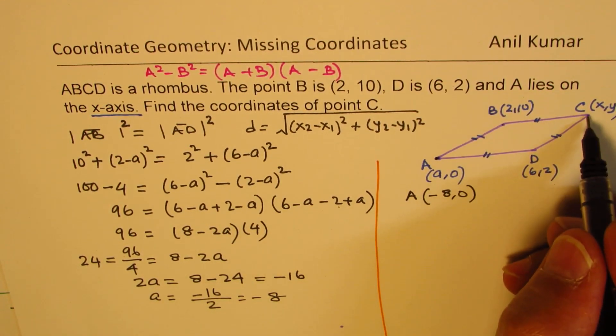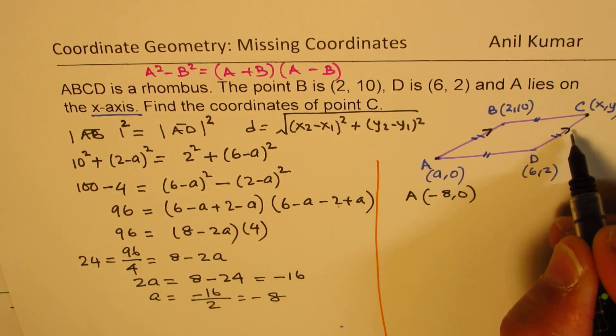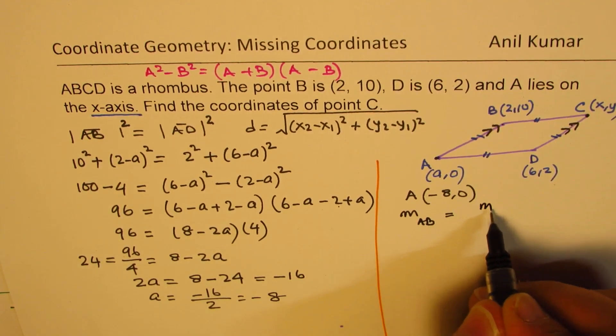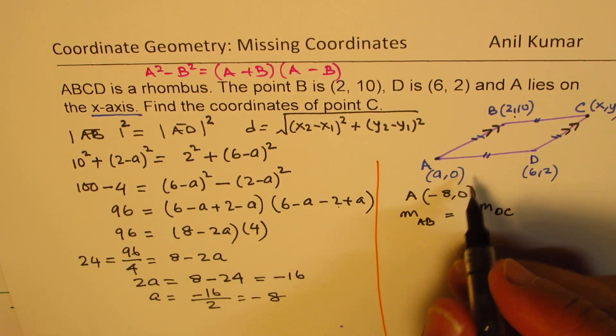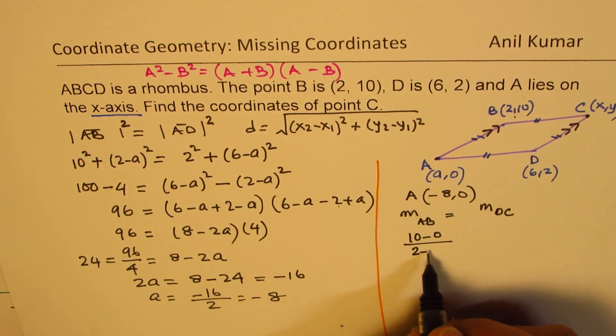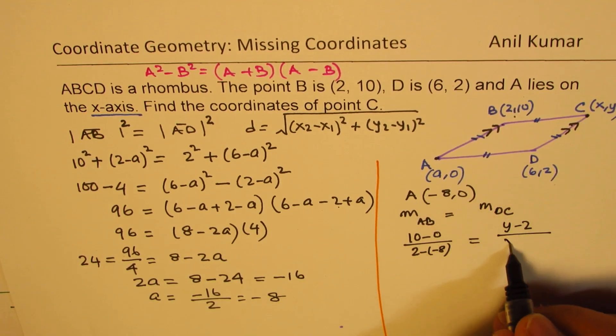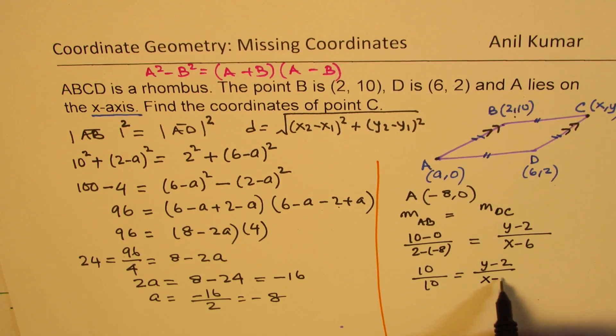Now we need to find coordinates of C. We could use the concept of slope since these two are parallel lines. So we know the slope from A to B is the same as slope from D to C. Slope from A to B is (10-0) over (2-(-8)), so 10 over (2+8). Slope from D to C is (y-2) over (x-6). Now this gives us 10 over 10, which is 1, equals (y-2) over (x-6).